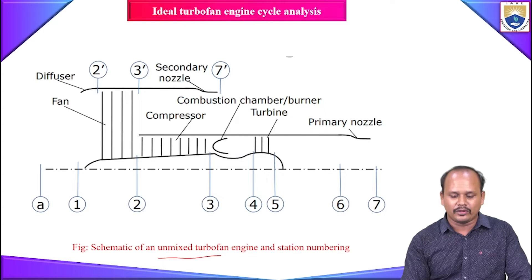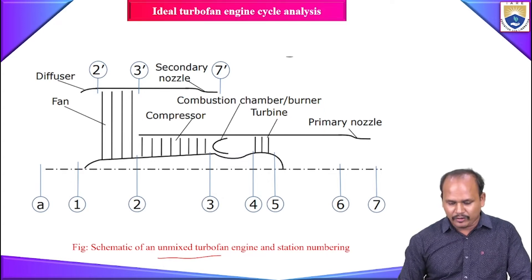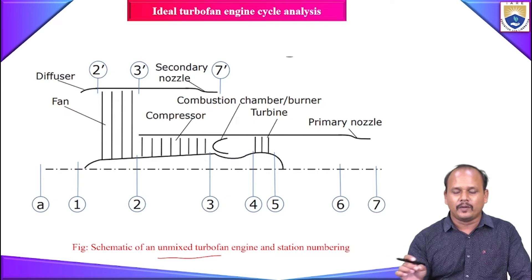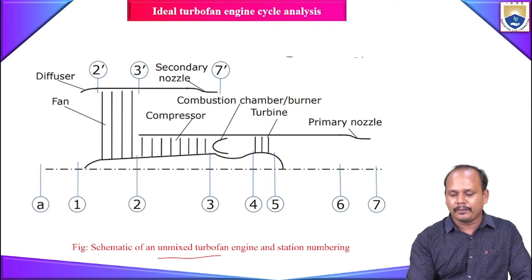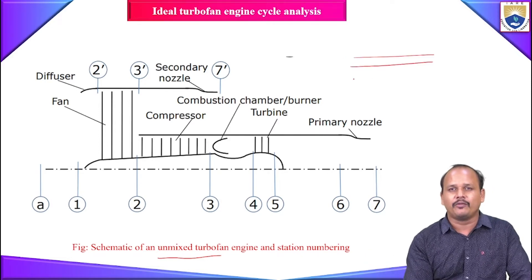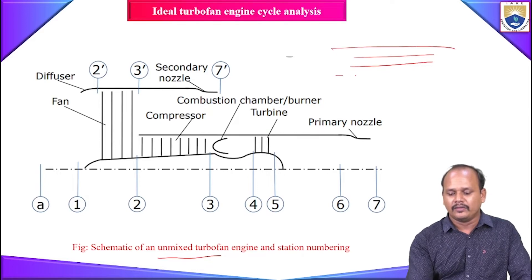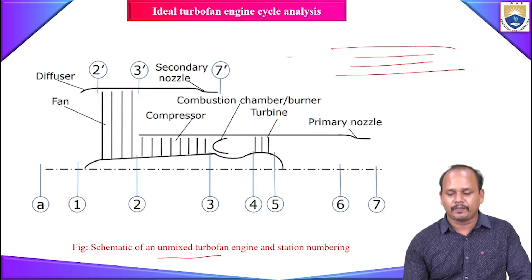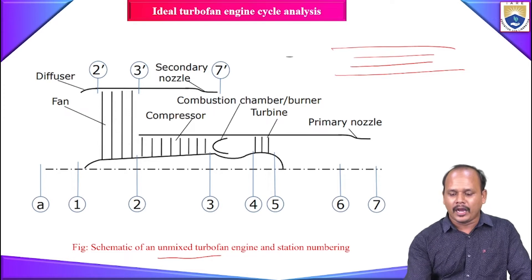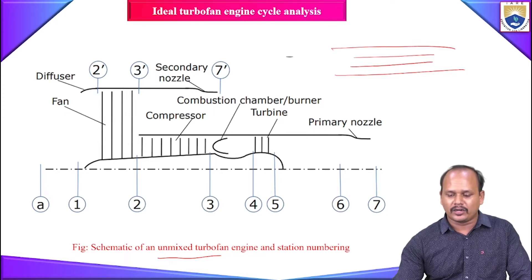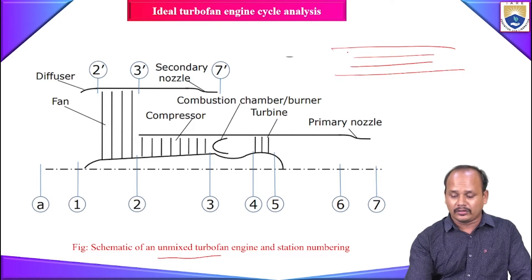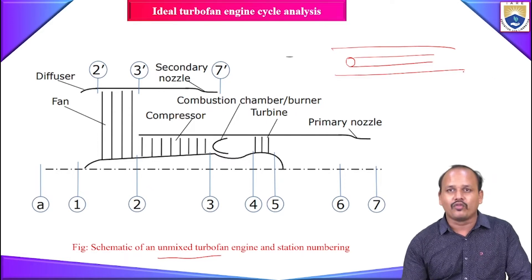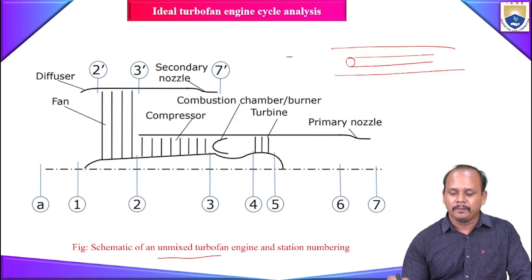For our analysis we take the unmixed turbofan. 'Twin spool' refers to having two concentric shafts. One center shaft connects the high-pressure compressor to the high-pressure turbine. The surrounding outer shaft connects the low-pressure turbine to the fan. So the compressor is driven by the high-pressure turbine, and the fan is driven by the low-pressure turbine.